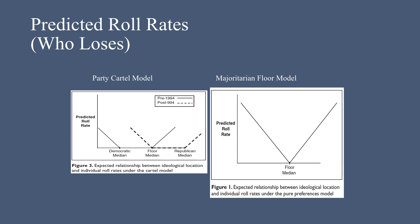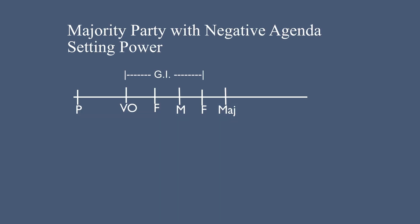That is why there is a larger region where the roll call rate is zero for the party cartel model. The party's ability to exercise negative agenda control makes it harder to get things done. During the Pivotal Politics lectures, this was the gridlock interval. But with the majority party's ability to exercise negative agenda control, the gridlock interval can expand.